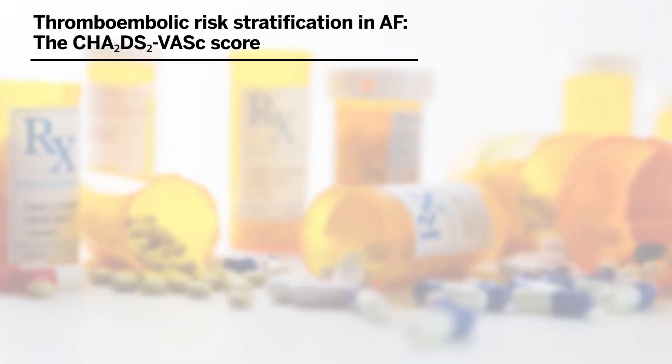We can't discuss oral anticoagulation in AFib without a brief discussion of risk stratification. Two different patients can have AFib for the same amount of time and have a very different risk of stroke, as stroke risk depends not only on the AFib but also on how likely that patient is to form a clot while in AFib — and this depends on many different factors. The most clinically useful risk stratification scheme is called the CHADS-VASc score.